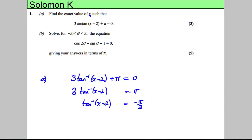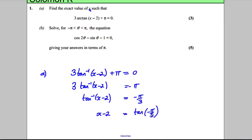And then we could apply tan to both sides. So X subtract 2 would be equal to tan of negative pi by 3. And lastly, X therefore would be 2 plus tan of negative pi by 3.